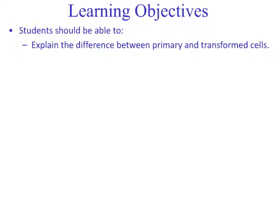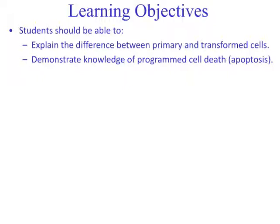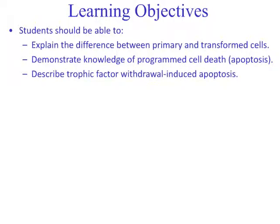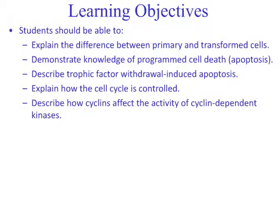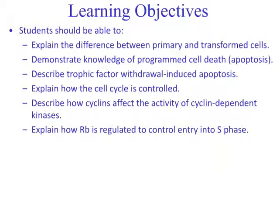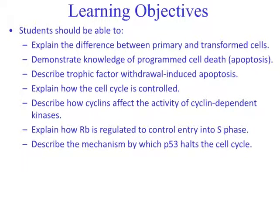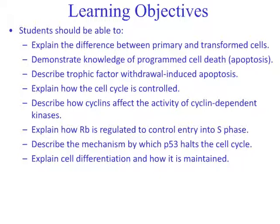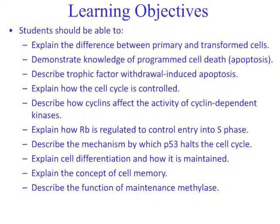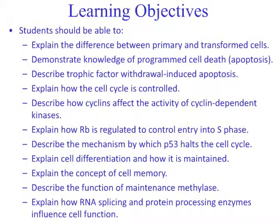After completing this learning module, students should be able to explain the difference between primary and transformed cells, demonstrate knowledge of programmed cell death or apoptosis, describe trophic factor withdrawal-induced apoptosis mechanisms, explain how the cell cycle is controlled, describe how cyclins affect the activity of cyclin-dependent kinases, explain how retinoblastoma is regulated to control entry into S phase, describe the mechanism by which p53 halts the cell cycle, explain cell differentiation and how it is maintained, explain the concept of cell memory, describe the function of maintenance methylase, and explain how RNA splicing and protein processing enzymes influence cell function.